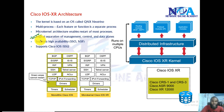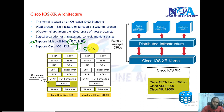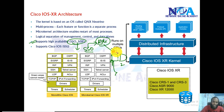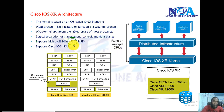Apart from that, IOS XR supports high availability features. Stateful switchover allows you to switch over to a redundant processor — IOS XR supports dual processors, processor 1 and processor 2. If the active processor 1 fails due to overheating, hardware failure, or other issues, traffic will automatically switch over to the standby processor. This is called stateful switchover.